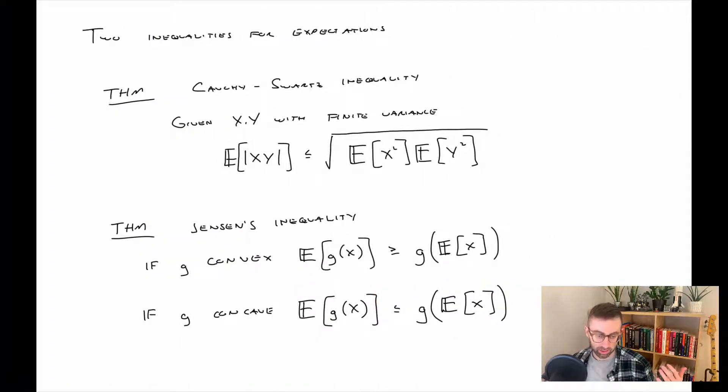So lastly, I just want to note a couple inequalities that we're not going to do examples of, but just rounding out the information here. So Cauchy-Schwarz inequality is useful when you're looking at two random variables simultaneously. It gives an upper bound on the expected value of the absolute value of x times y. And then also Jensen's inequality, which gives you information about functions of expected values of random variables or expected values of functions of random variables. And how the inequality works depends upon whether or not the function is convex or concave. So that's it for inequalities.